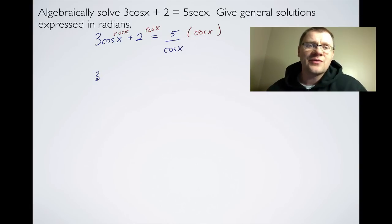So as long as we multiply each term by cosx, then we're okay. So this ends up being 3cos²x, this ends up being 2cosx, and on the right-hand side, we just get a plain old 5 because our cosines cancel out.